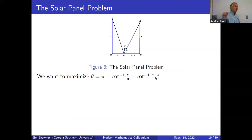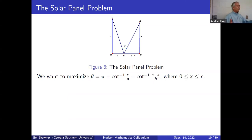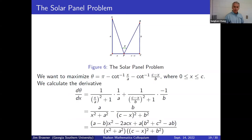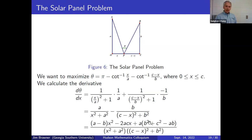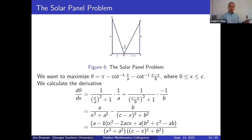Computing the derivative of theta with respect to x and simplifying, the numerator of the derivative (after getting a common denominator) is: (A−B)x² − 2ACx + A(B² + C² − AB), while both terms in the denominator are positive.